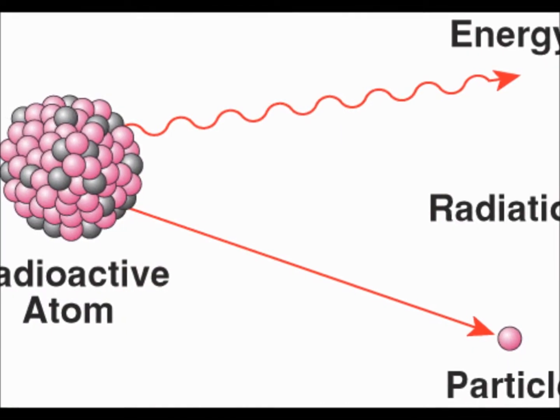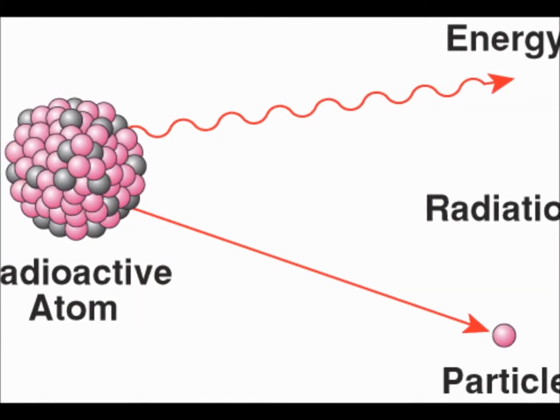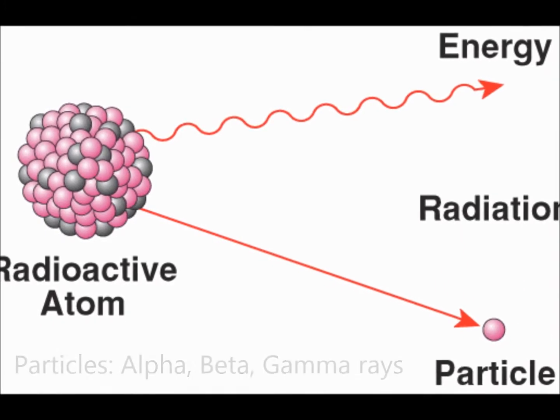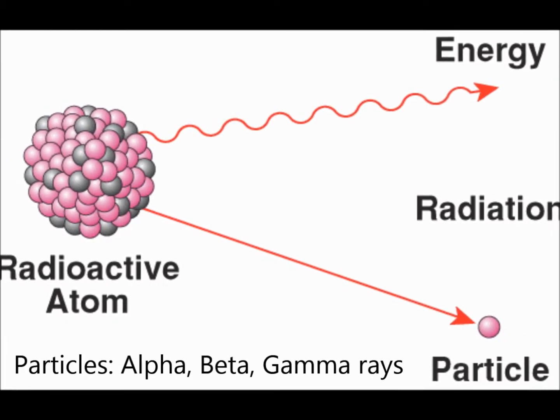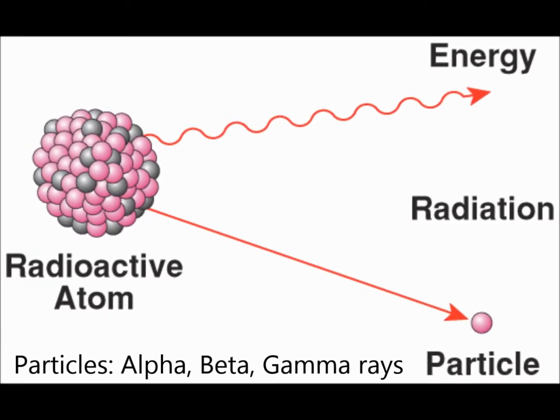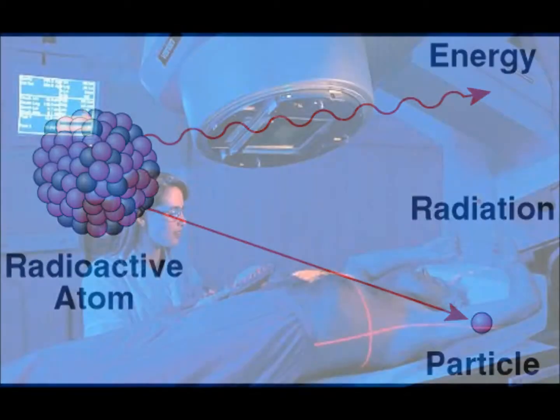Unstable radioactive isotopes, more commonly known as radioisotopes, are isotopes that decay, forming different atoms by emitting radioactive particles.